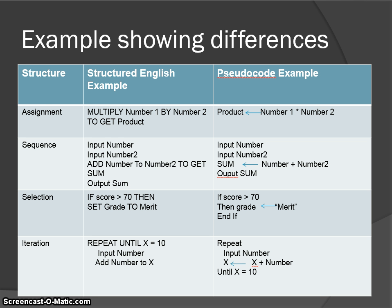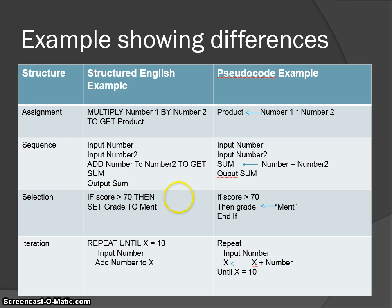Here are some examples. If we look at the structured English, we've got: multiply number one by number two to get product; input number, input number two, add number to number two to get sum, output sum; if score is greater than 70, then set grade to merit; repeat until x equals 10. So we've got command words going on here — that's structured English.